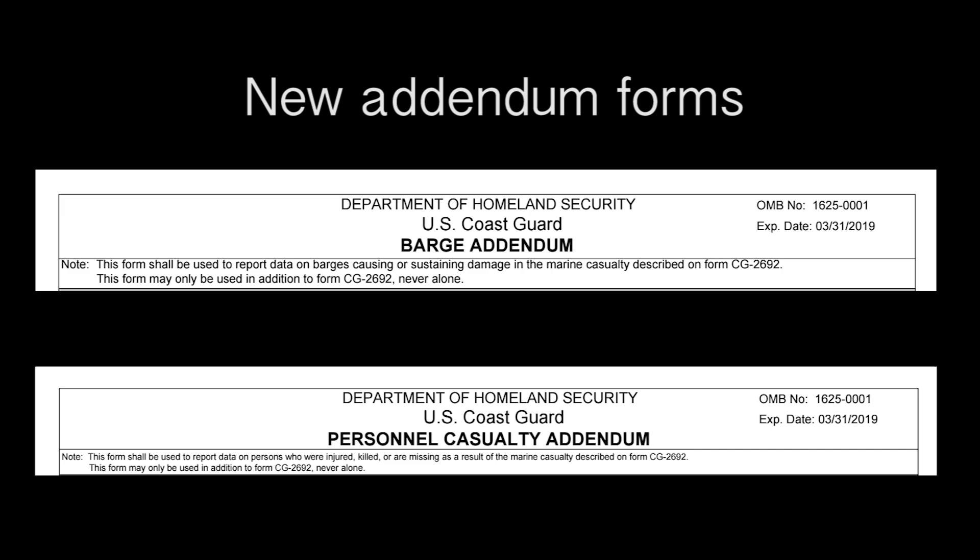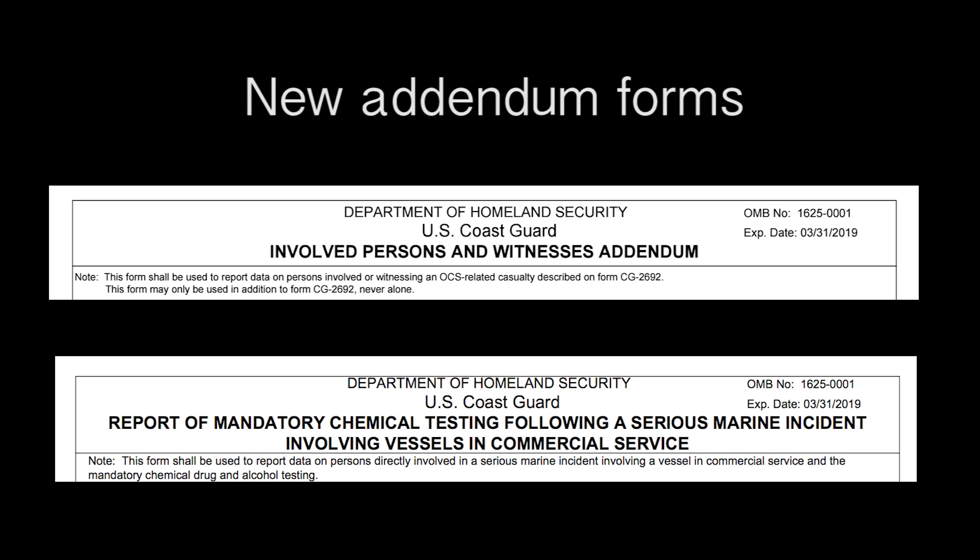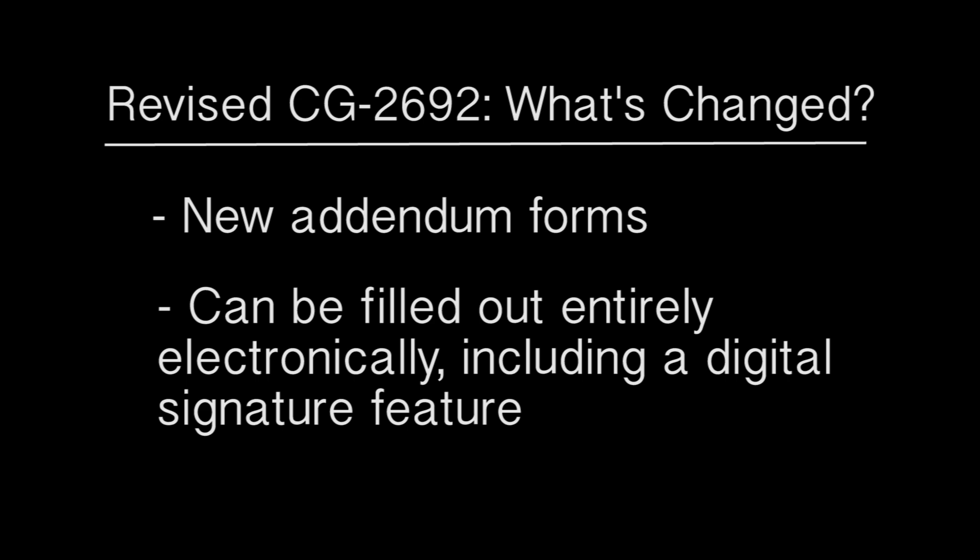There are many changes to this new form that you will notice at first glance. First, there are now several addendums that will ease the burden of reporting incidents with multiple injuries, deaths, or barges involved. Additionally, the form can be entirely completed electronically, including using a digital signature. Owners and operators are encouraged to work with their local Coast Guard sectors to obtain the best and most up-to-date email addresses where they can electronically file the reports.